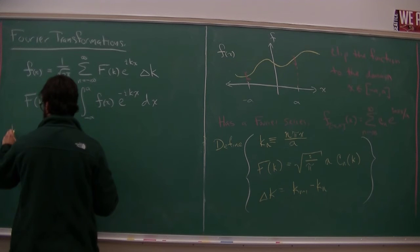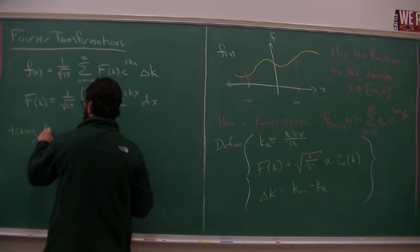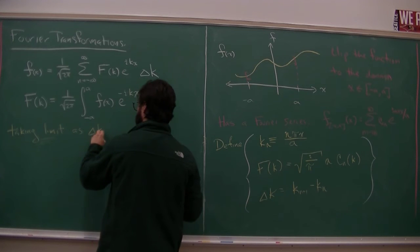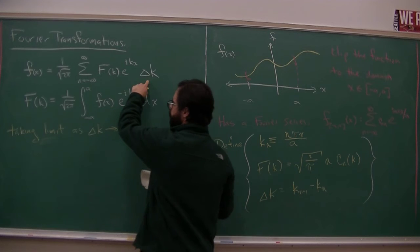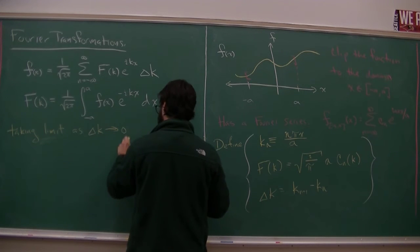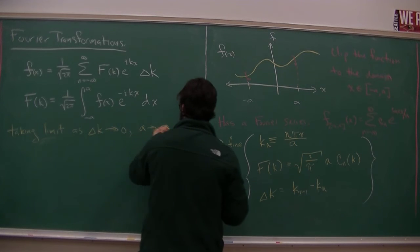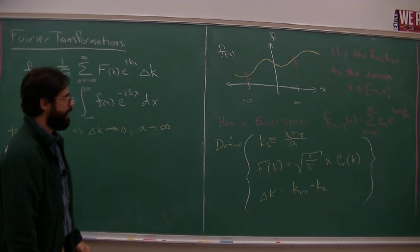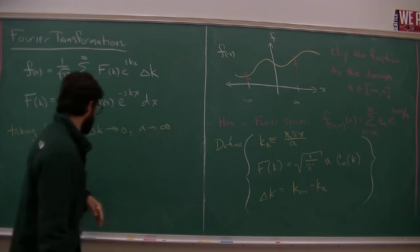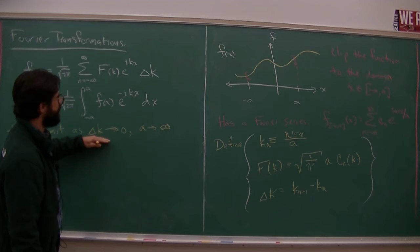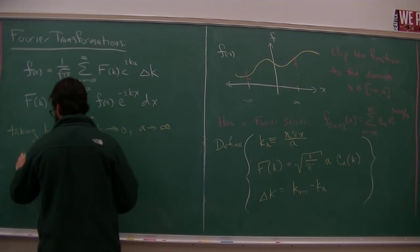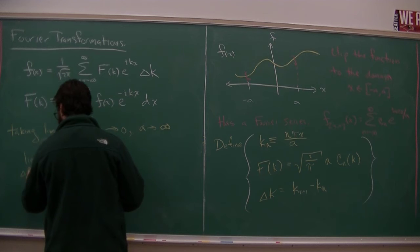So this is the limit we need. The limit to take is as delta k goes to 0, and then as a goes to infinity. So this is what we really want. We want to expand the interval over which we're representing the function with the Fourier series from minus a to a to minus infinity to infinity. So we've got the whole function. And in order to do that in such a way that things don't vanish, delta k goes to 0. So what we have is limit as delta k goes to 0, which means I get to call it dk.